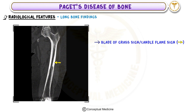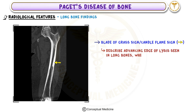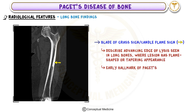Long bone findings in Paget's disease include the blade of grass sign, also called the candle flame sign. These terms describe the advancing edge of lysis seen in long bones, where the lesion has a flame-shaped or tapering appearance. This is an early hallmark of Paget's disease in the long bones.